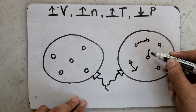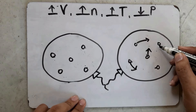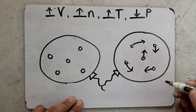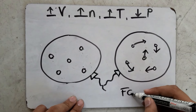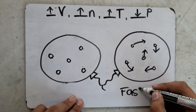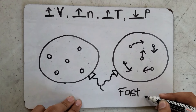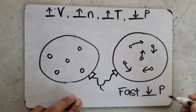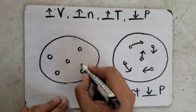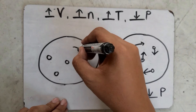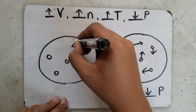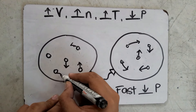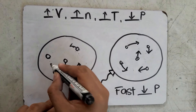The faster the particles move inside the balloon, the lower the pressure. And if the particles move slower, the pressure is higher.